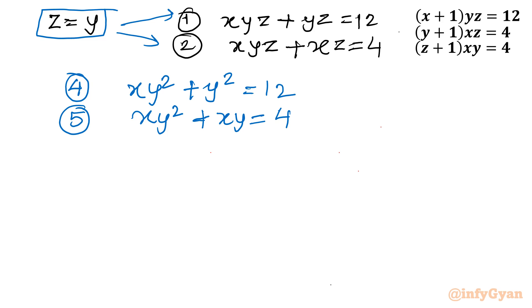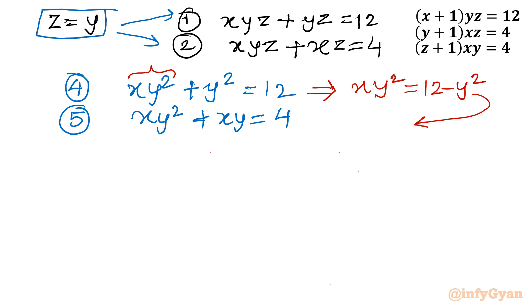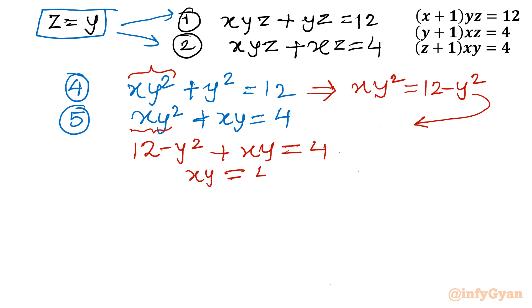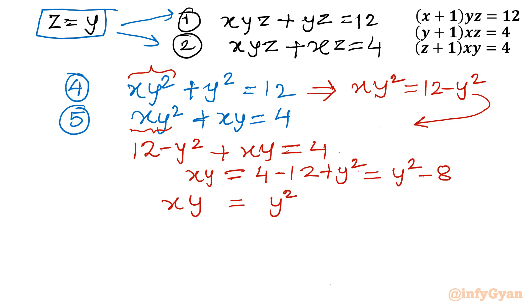From equation 4, I calculate xy² = 12 − y². I substitute this into equation 5: (12 − y²) + xy = 4, which gives xy = 4 − 12 + y² = y² − 8. So now we have xy = y² − 8.